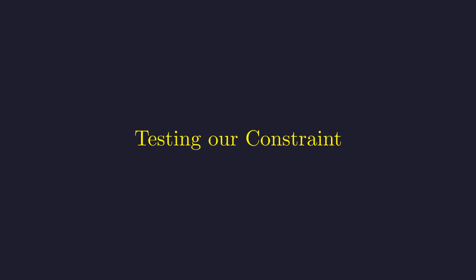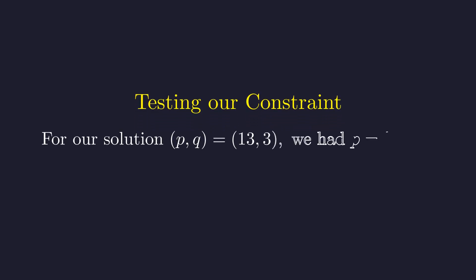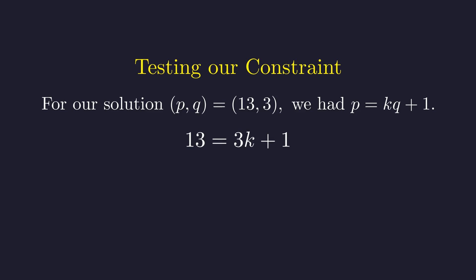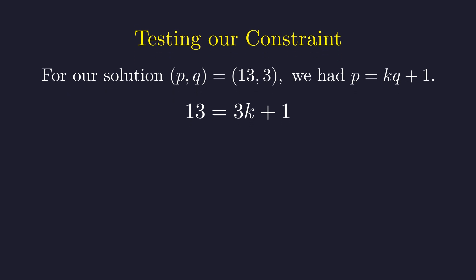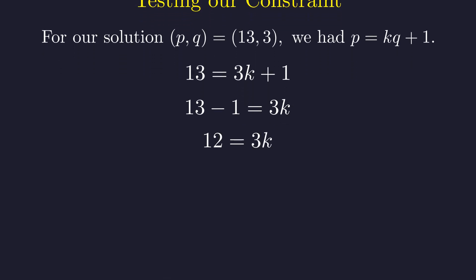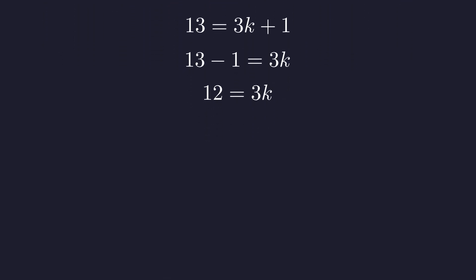Let's test this new constraint. We will verify this constraint using our known solution where p is 13 and q is 3, which corresponds to the case p equals k times q plus 1. To find the value of k for this solution, we first isolate the term containing k by subtracting one from both sides. The left side evaluates to 12. To solve for k, we now divide both sides by 3. 12 divided by 3 equals 4. Therefore, for this particular solution, the integer k must be 4.